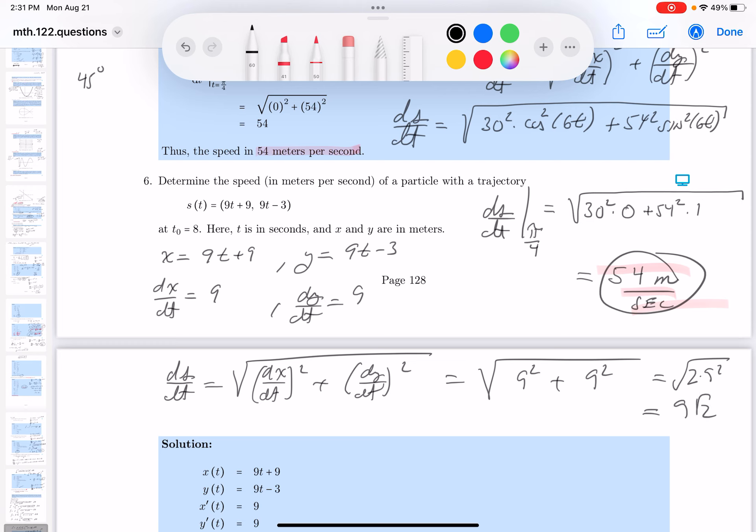All right. So at t equals 8, you know, it says over here. Let me just read it to you. Determine the speed of the particle at t equals 8, where t is in seconds and the other thing is in meters. So what's it going to be?